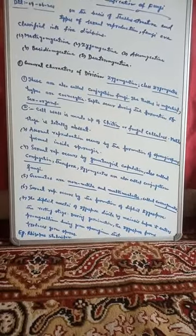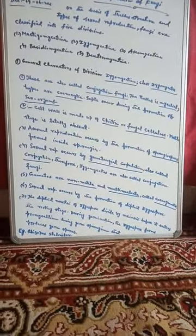An example of this division is Rhizopus stolonifer — R-H-I-Z-O-P-U-S, Rhizopus, S-T-O-L-O-N-I-F-E-R, stolonifer. This is the example of the division Zygomycotina. So this was all about this division of Fungi.